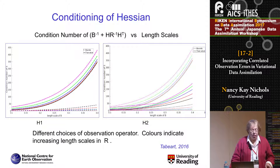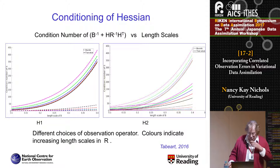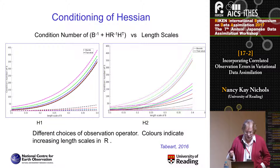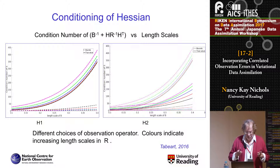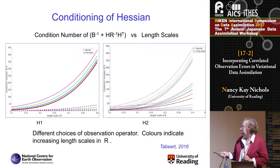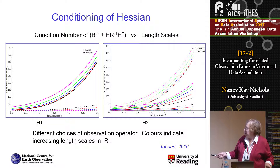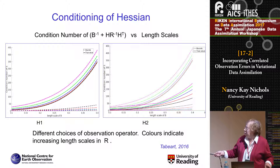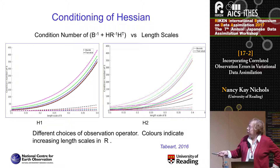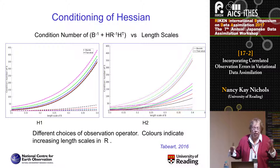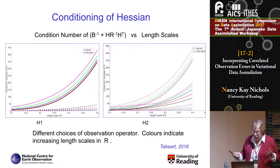These results come from idealized studies with one particular choice of observation operator — an advection model where we observe the first half of the variables and not the second half, and also where we observe every other one. Here the bounds are tight — shown by dashed lines — and this depends on the length scale of matrix B. The condition numbers all increase as the length scale of B increases, and the colors represent the conditioning with respect to the length scale of matrix R, which also increases with length scale. So everything gets worse as the length scales increase, and the condition numbers lie between the bounds, confirming the bounds are effective.